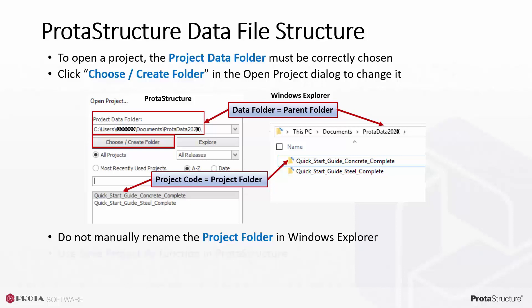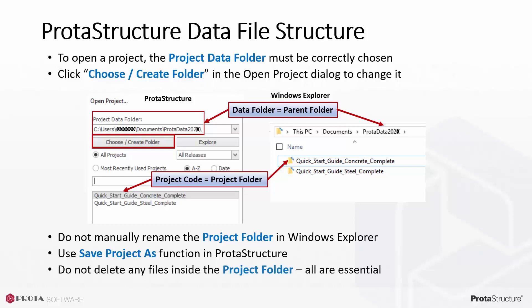If you wish to rename the project, please use the Save Project As function in Protostructure. Further, do not delete any files inside the project folder, as all files are essential to the model.